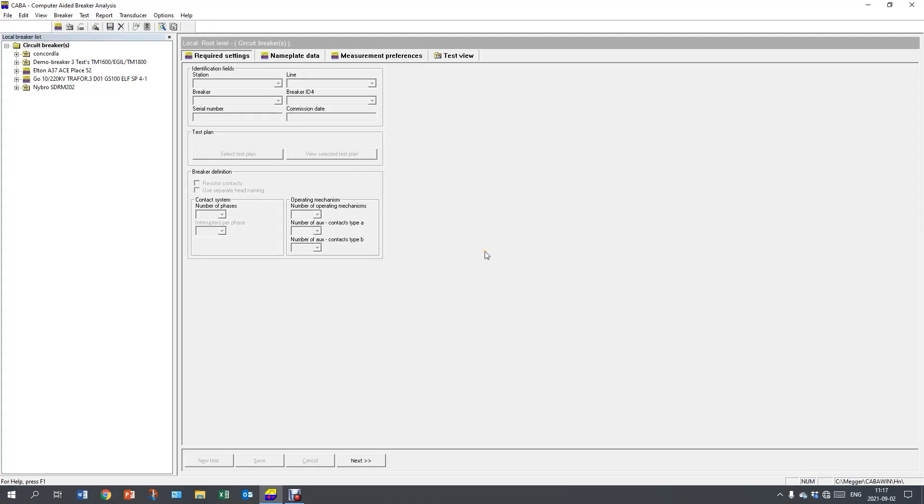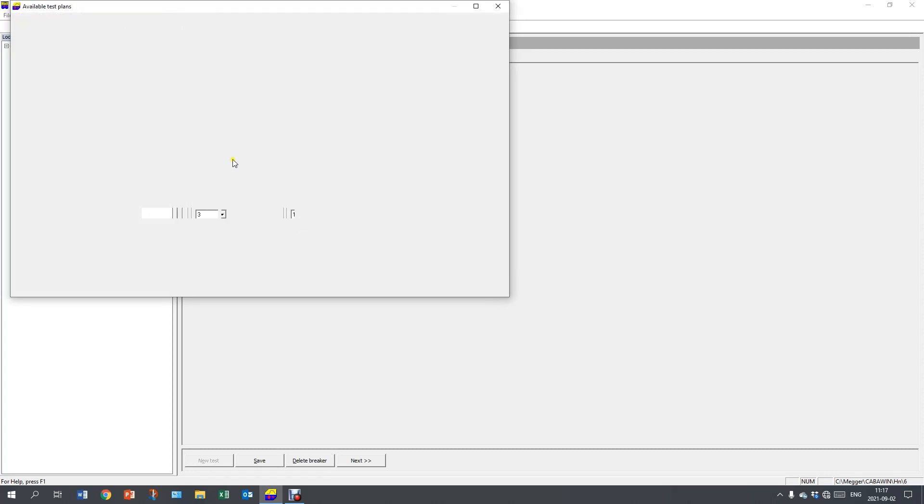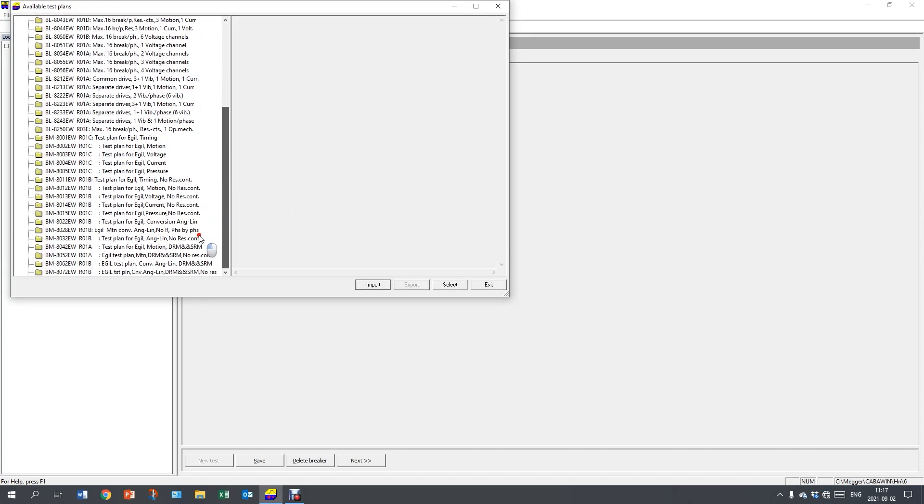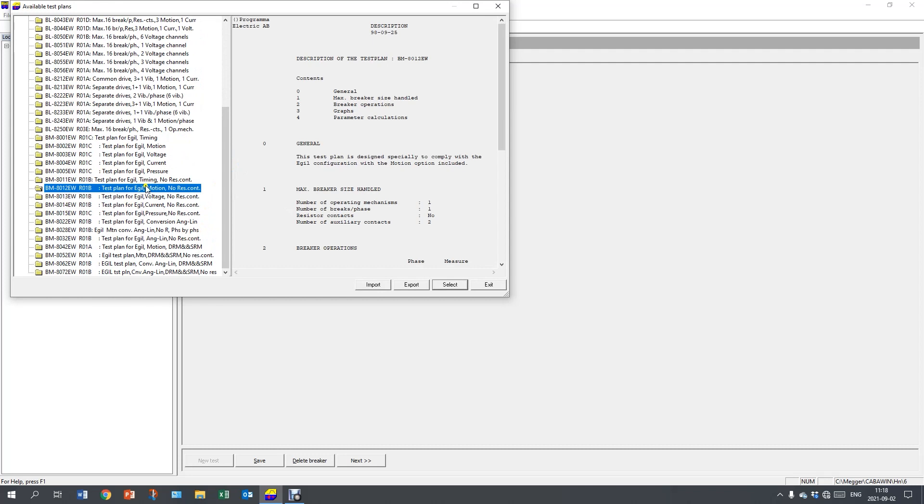And I have connected the Eagle with my PC. I start with creating a new object, a new breaker, and I give it a name. I select the test plan. And I need an Eagle test plan. And I want to use one with motion and no resistor contact. So I select BM8012 EV.